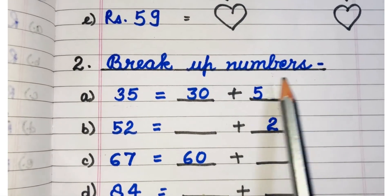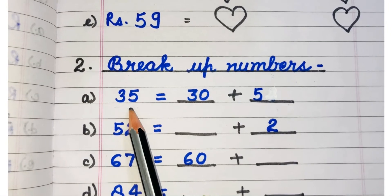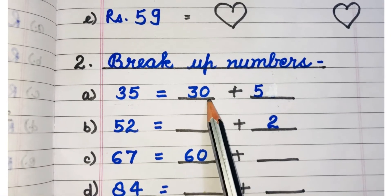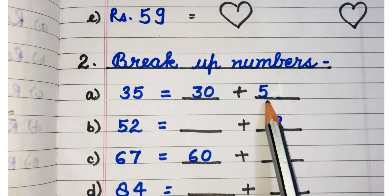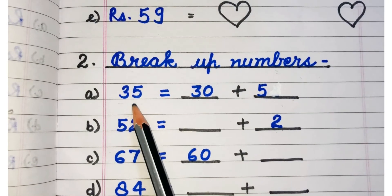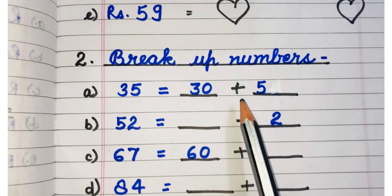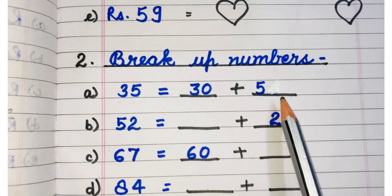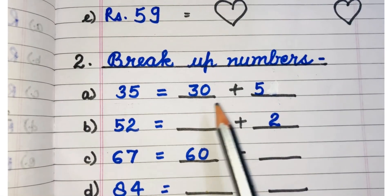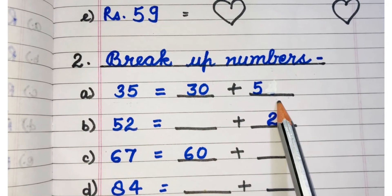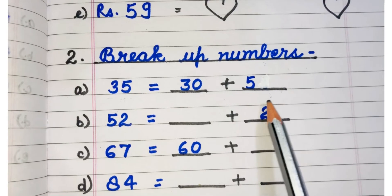Question number 2. What are breakup numbers? Number 35. Number 35 is 3 tens plus 5 ones. So I have written number 35 as 30 that is 3 tens and 5 that is 5 ones. So 35 in breakup number form will be 30 plus 5.